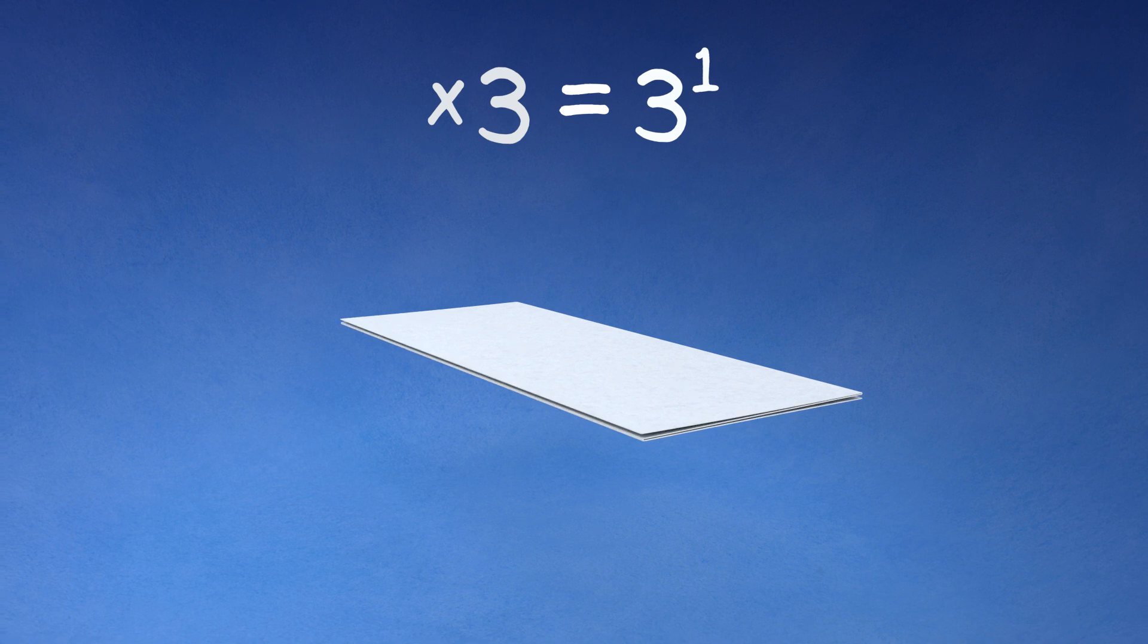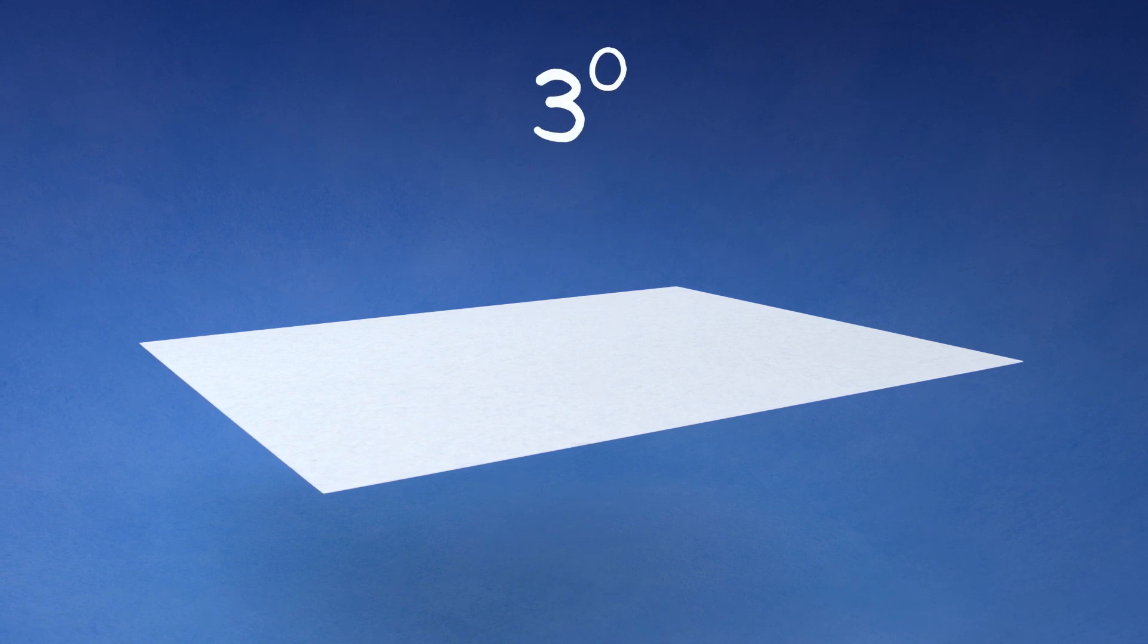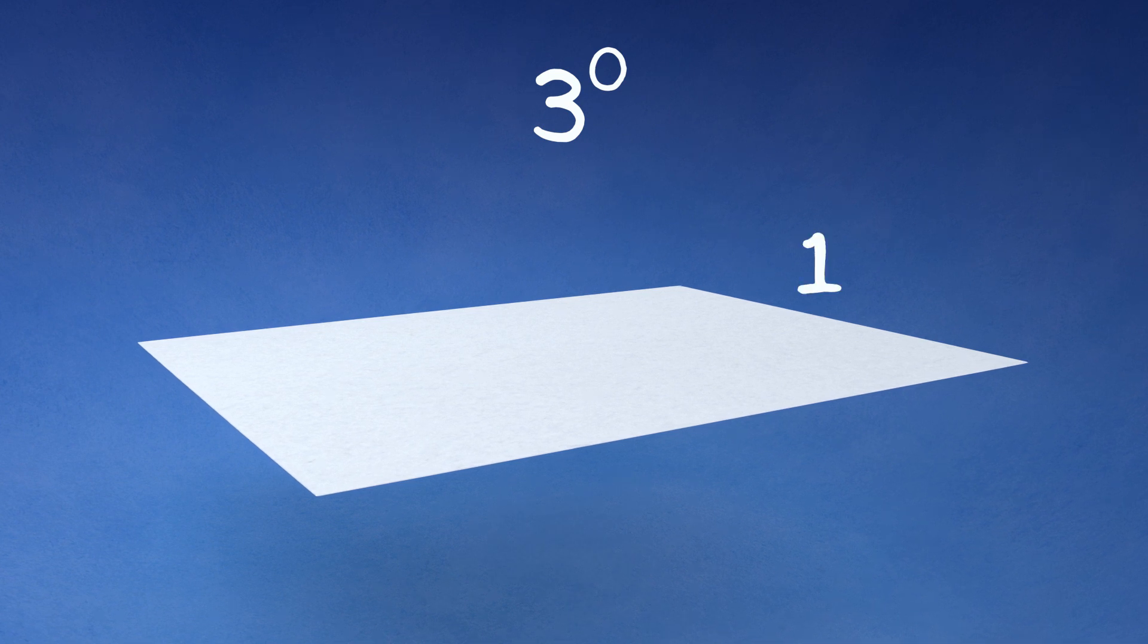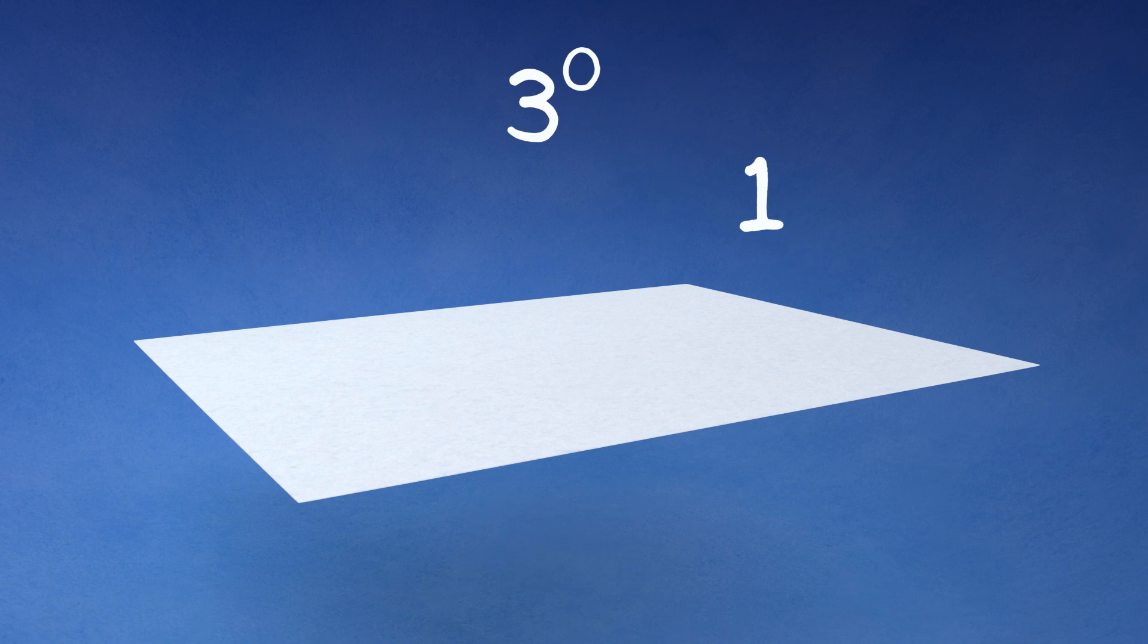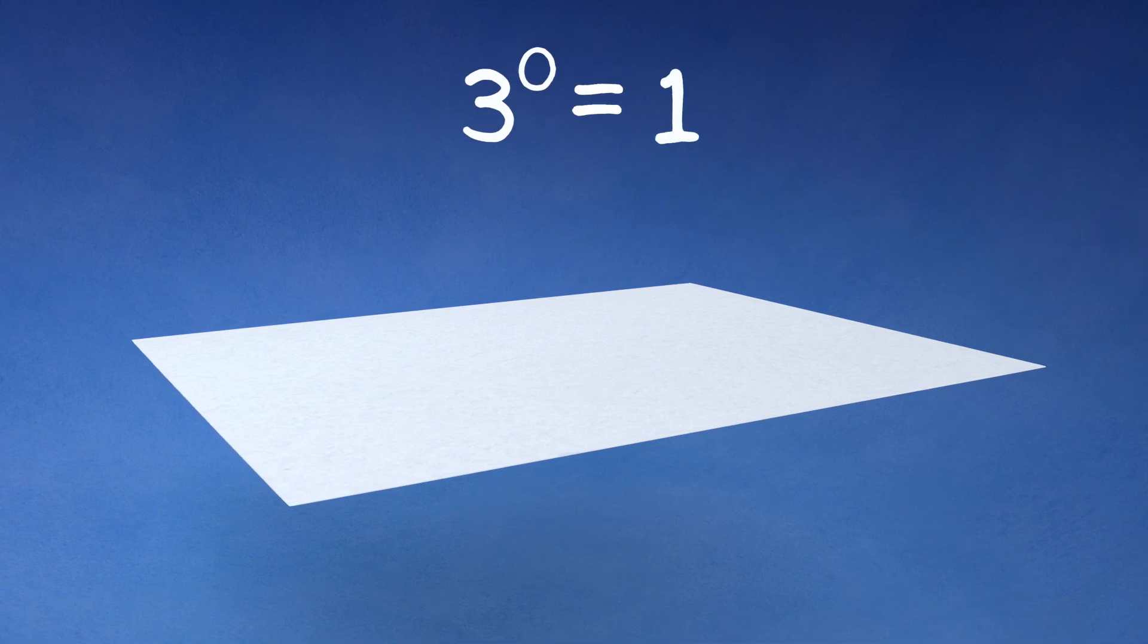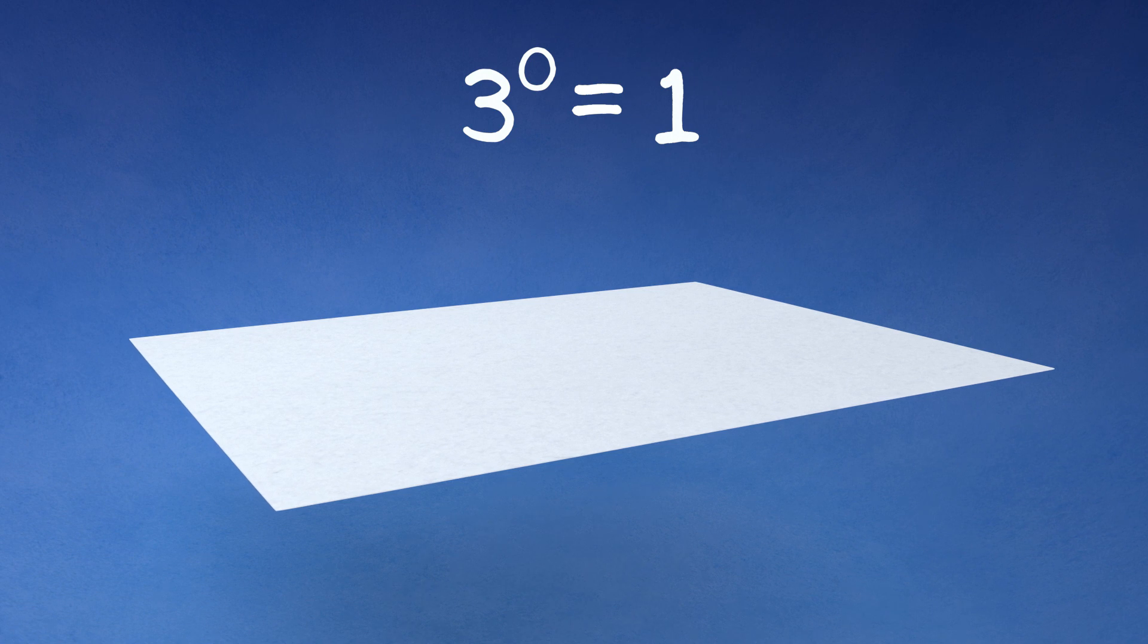If we undo the last stage of folding, we have no longer tripled the page. There is no longer a times three being performed on the paper. This would be three to the power of zero. If we look at the thickness of the page, it is just one page thick. Three to the power of zero is one. In fact, any base number to the power of zero will be one.